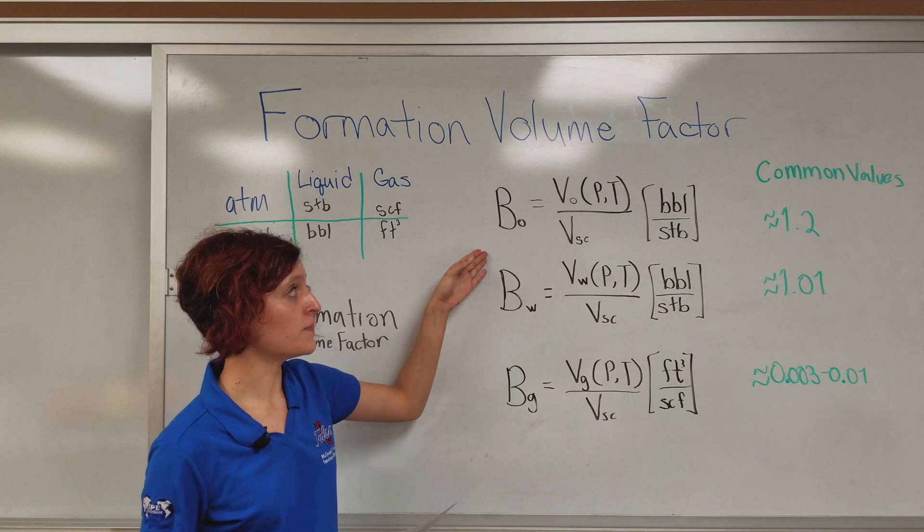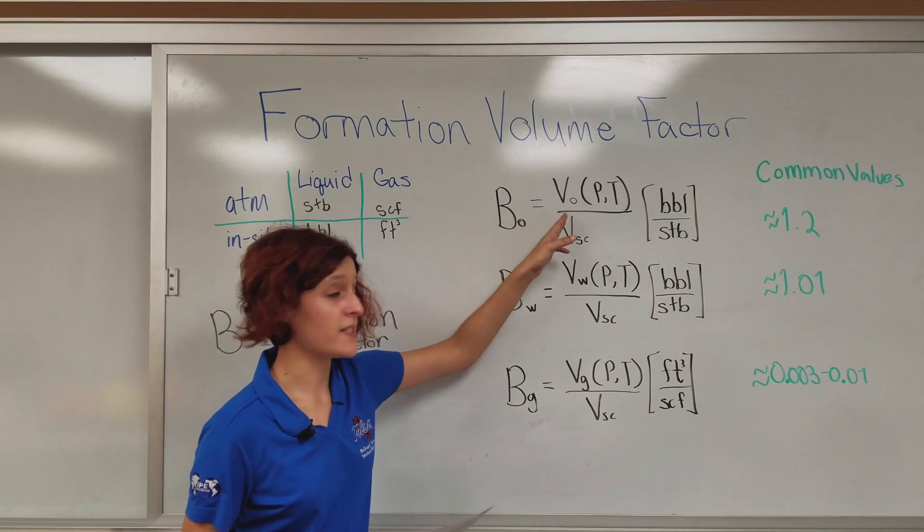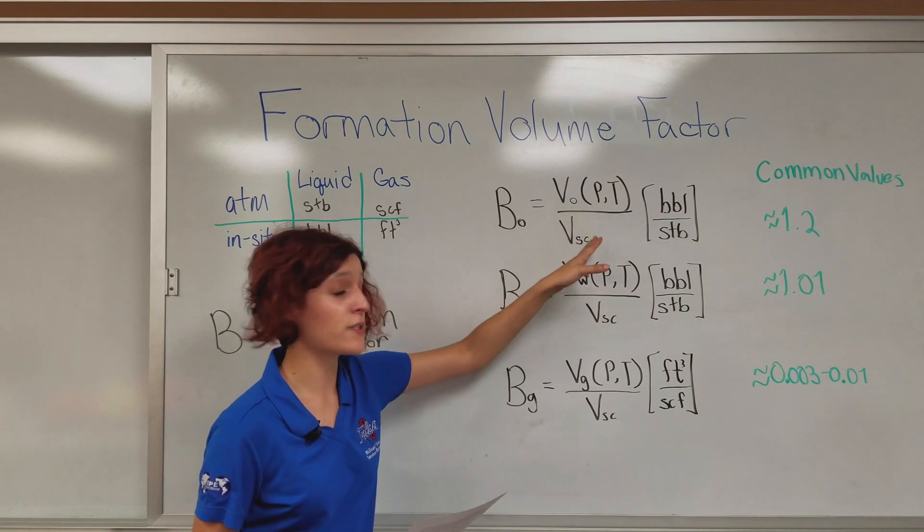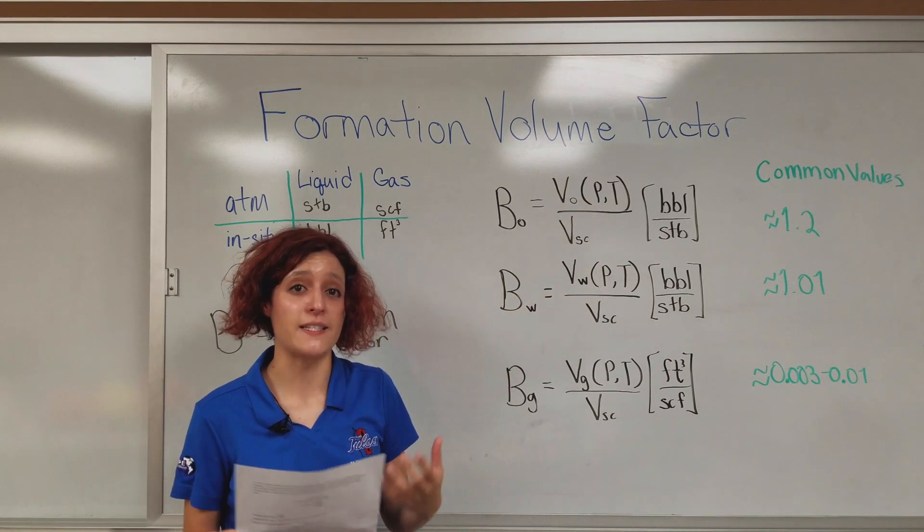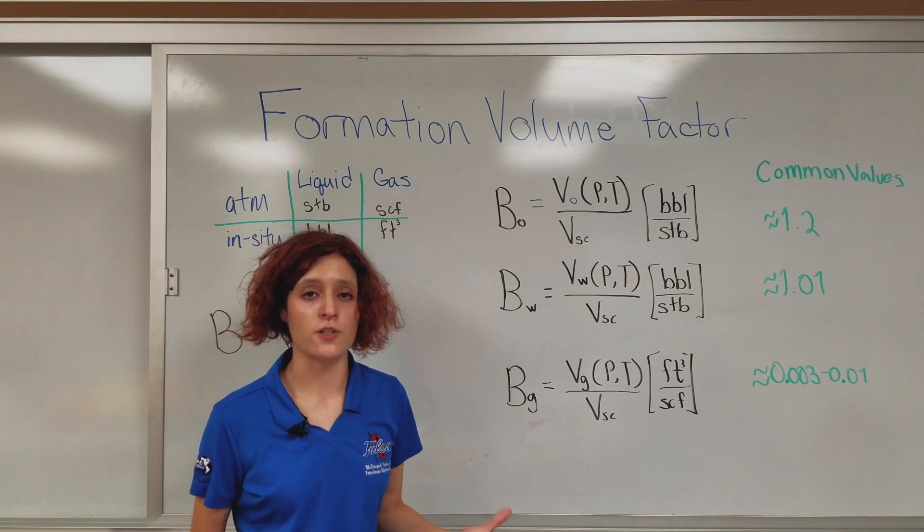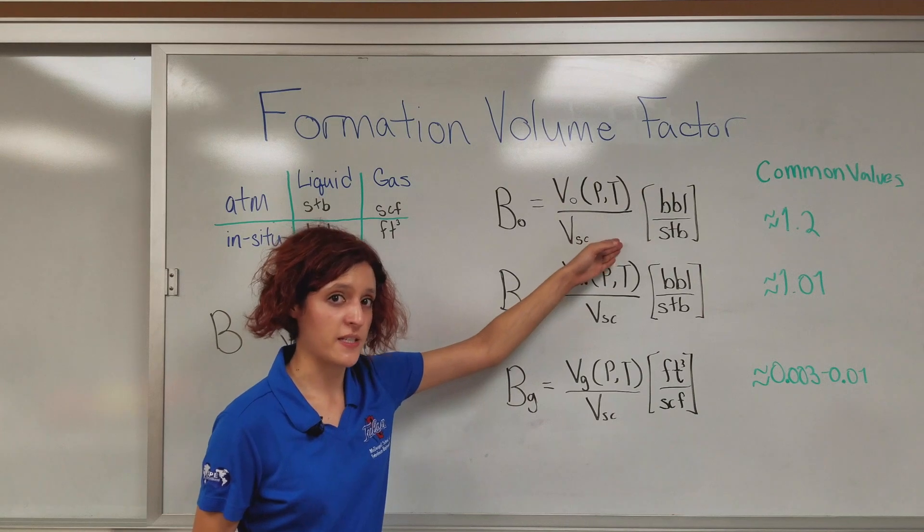So, for oil, it's the volume oil occupies at a certain pressure and temperature. So, the volume it's occupying at the surface, as standard conditions. And its units are BBL per STB.